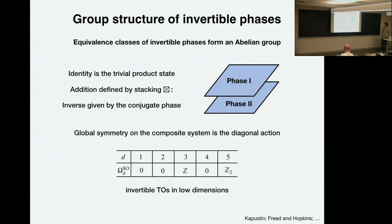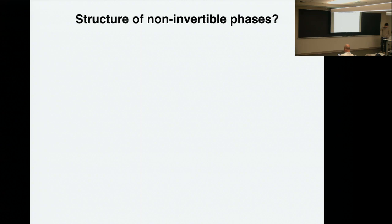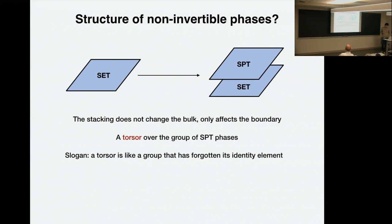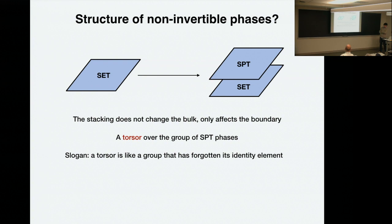The structure of non-invertible phases is much less clear. Basically, you don't really have a group structure. You can still stack two SET phases together, but it doesn't really give you a group structure. But there is still a structure coming from stacking a vertical phase on a non-invertible phase — you can always do that. If you have a symmetry-enriched topological phase with anyons and various symmetry actions, you can always put on top of it another symmetry-protected phase, which will not change anything in the bulk, because by definition the symmetry-protected phase has trivial bulk.